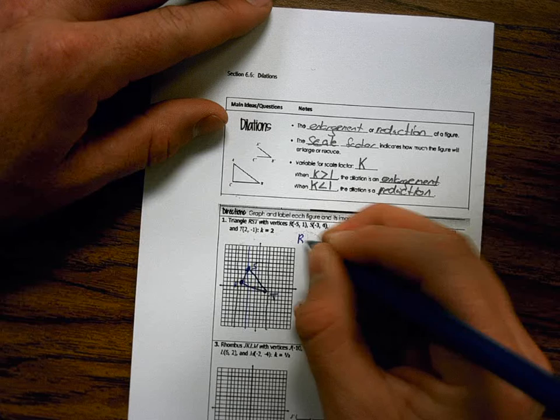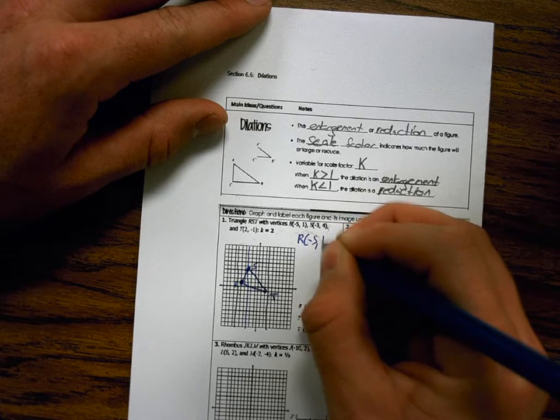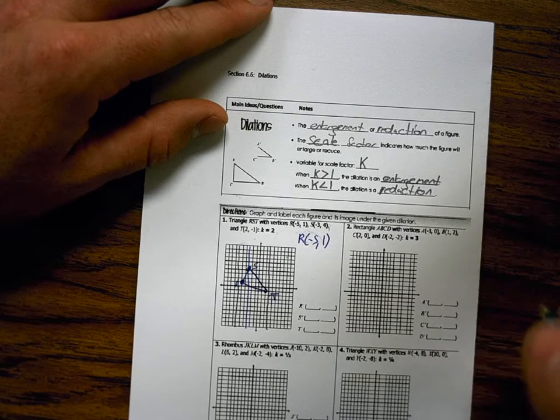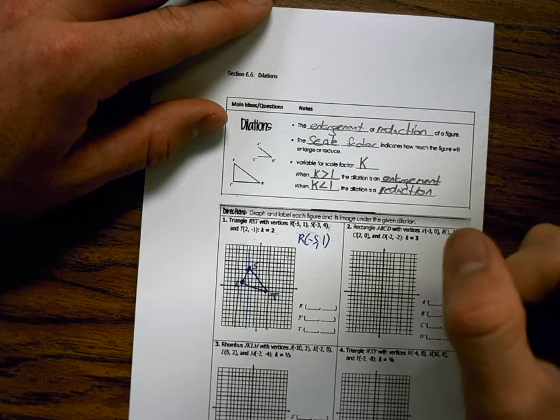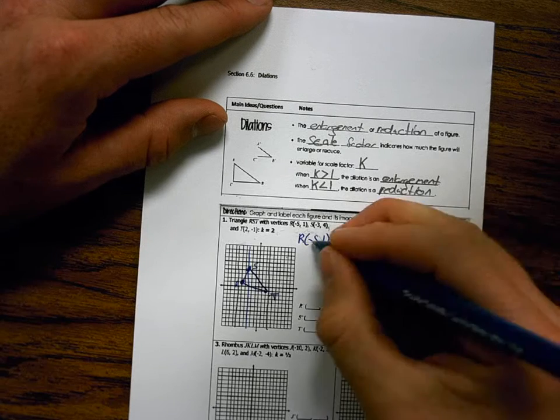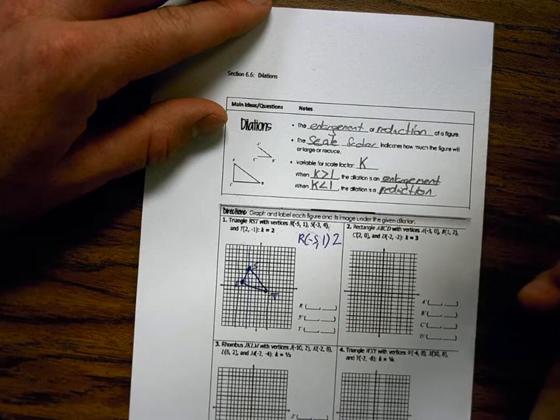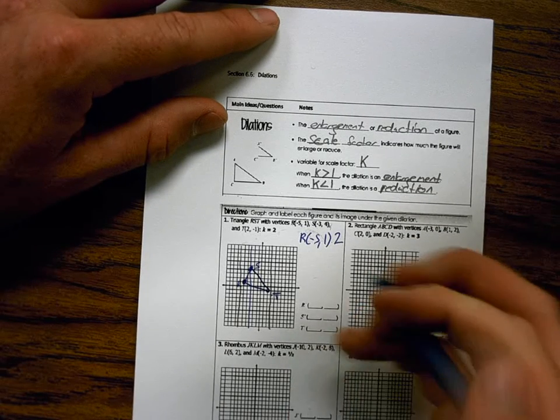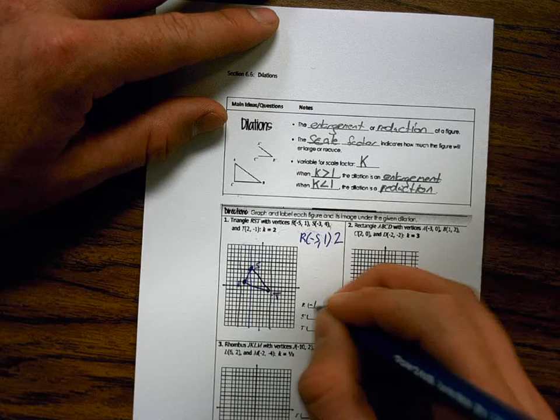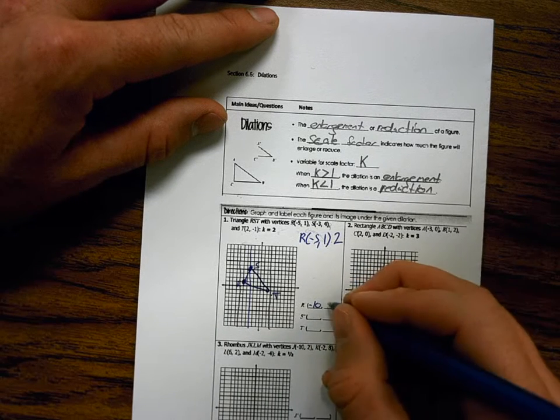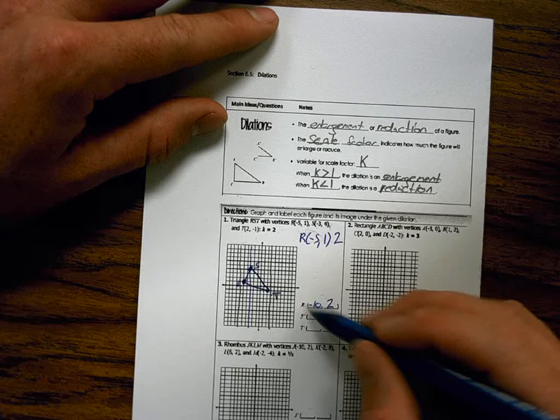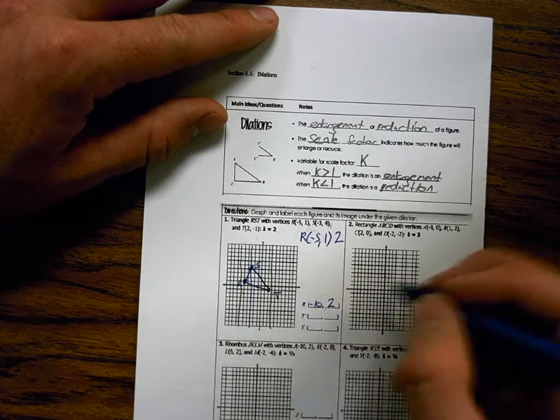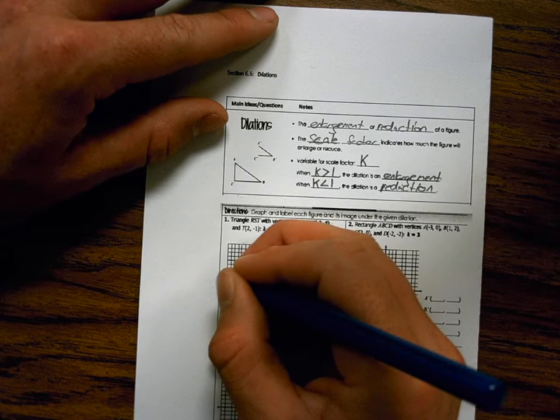To find the new points, you multiply the coordinate by 2. It's growing twice as big. So if I take R, negative 5, comma 1. And for these dilations, they're all dilating around the origin. So I would multiply the point times 2. Everything is going to be twice the distance from the origin. Negative 5 times 2 is negative 10. 1 times 2? 2. So here is my new coordinate, and I'm going to graph that. I would label that R prime.